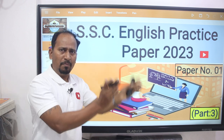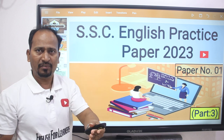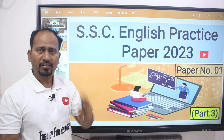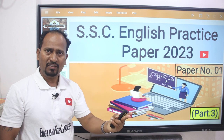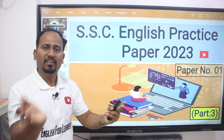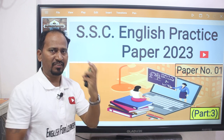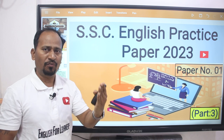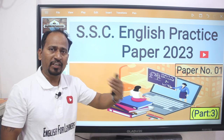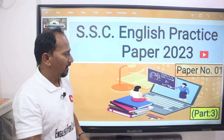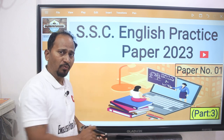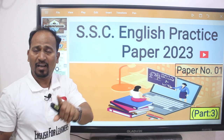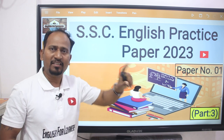In the previous two parts, we had covered section one, that was language study; section number two, the approach section; section three, poetry section; and section number four, that is non-textual passage. Now in this video, we will cover section number five, and that is writing skill.